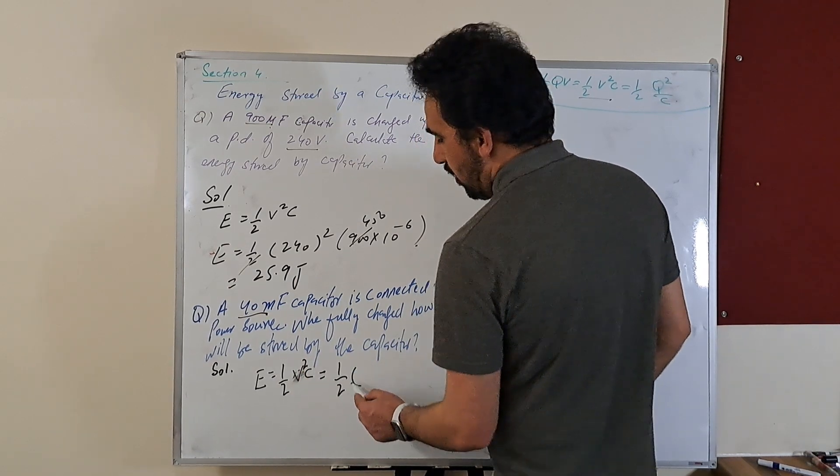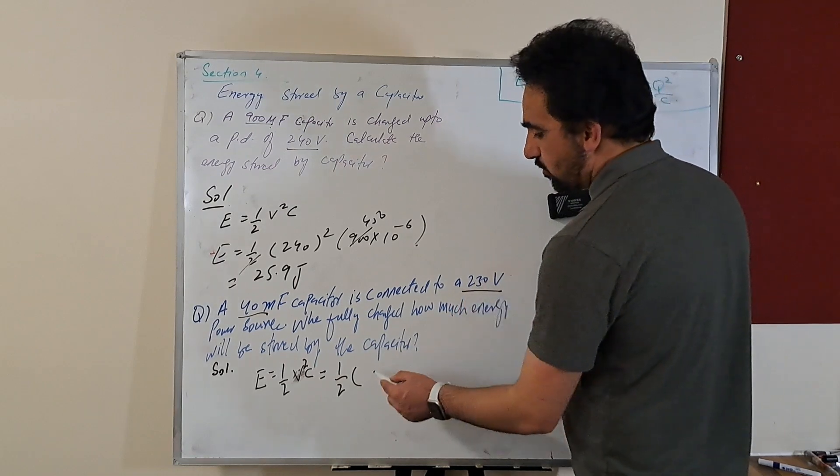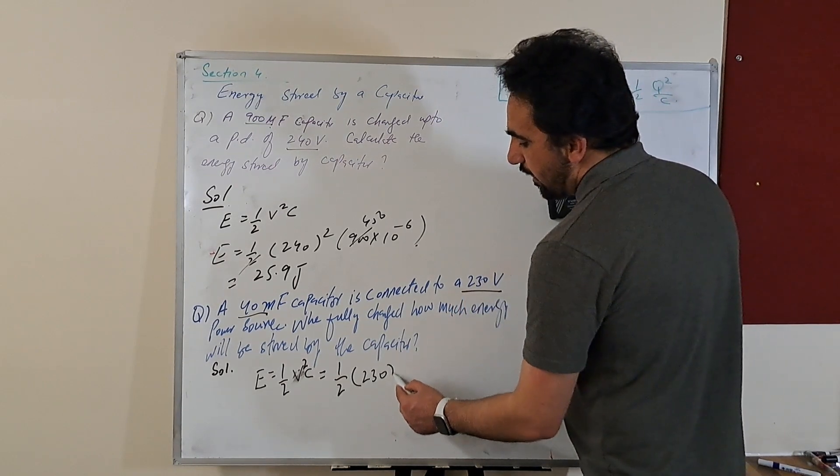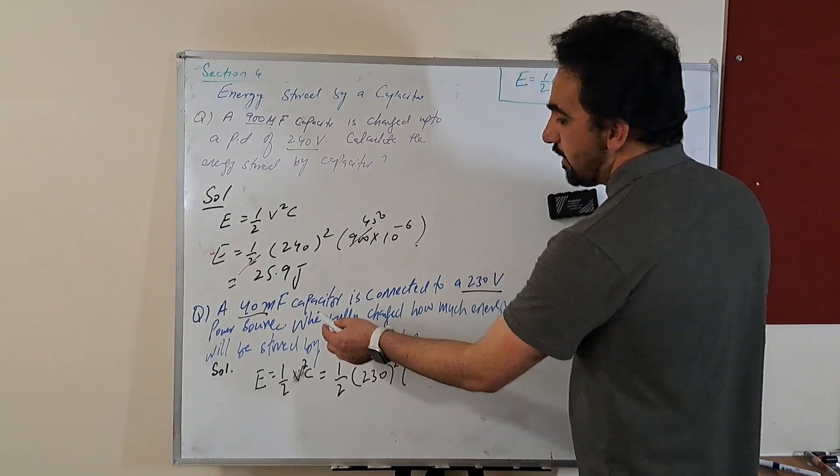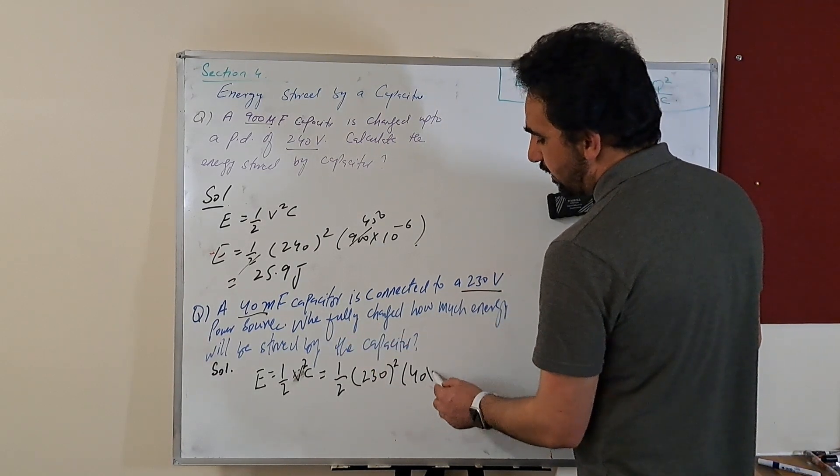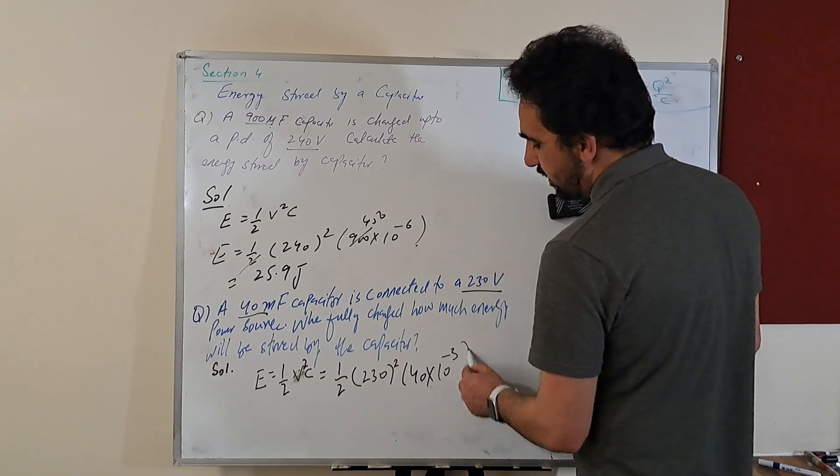1/2 and potential is now 230 and is squared. You can quickly find the square of 230 and then capacitance is 40 times 10 to the power minus 3.